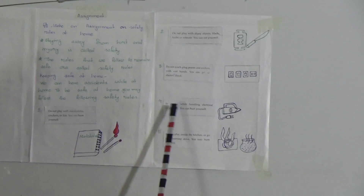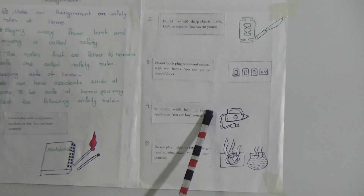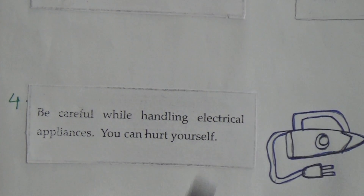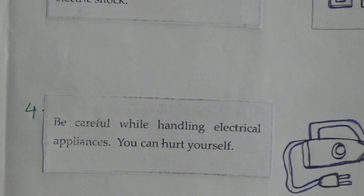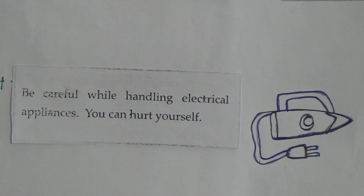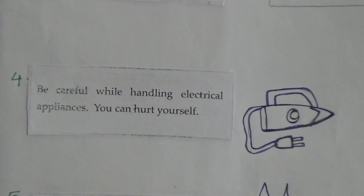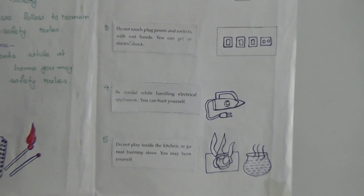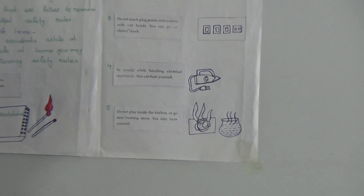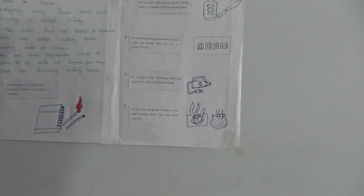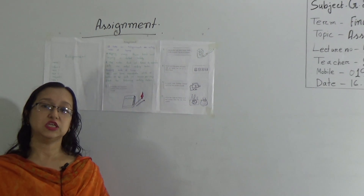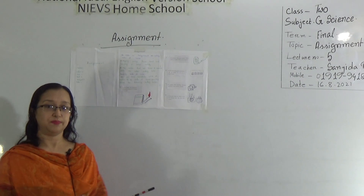Number four: be careful while handling electric appliances — you can hurt yourself. When you use electric appliances like a blender, juicer, oven, AC, or iron, you must be careful. If you are not careful, you can be injured by these electrical appliances.